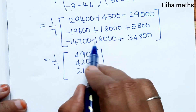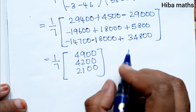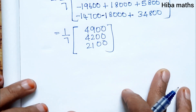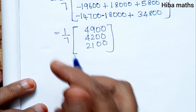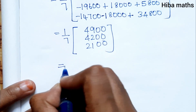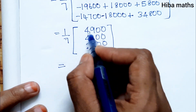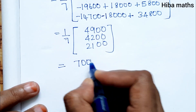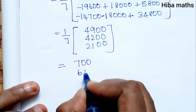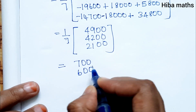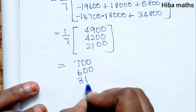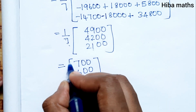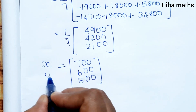Applying the plus-minus sign pattern for the cofactors. Then dividing by 7: 4900÷7 = 700, 4200÷7 = 600, 2100÷7 = 300. Very easy to solve.